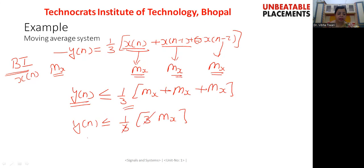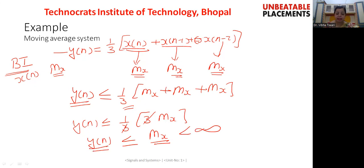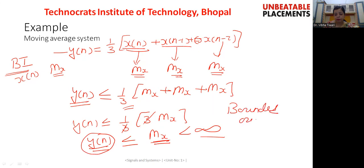The three cancels out and y(n) will always be less than or equal to mx. We assumed earlier that mx is less than infinity. Therefore, since y(n) cannot have a value greater than mx, and mx is less than infinity, y(n) will have a highest possible value of mx which is less than infinity. This provides us a bounded output, and since the system provides a bounded output, we say that this system is a stable system.